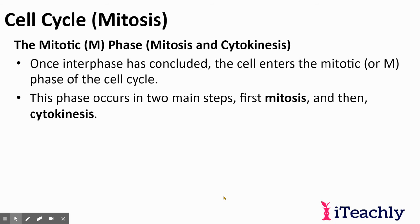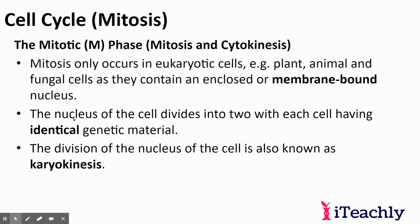Once interphase has concluded and the cell enters the mitotic phase, mitosis and cytokinesis occur. Some people separate them; some put cytokinesis in the same category as telophase. Mitosis only occurs in eukaryotic cells — plant, animal, and fungi — because they have a membrane-bound nucleus. The nucleus in the cell divides into two, each with identical genetic material. So you're essentially cloning.